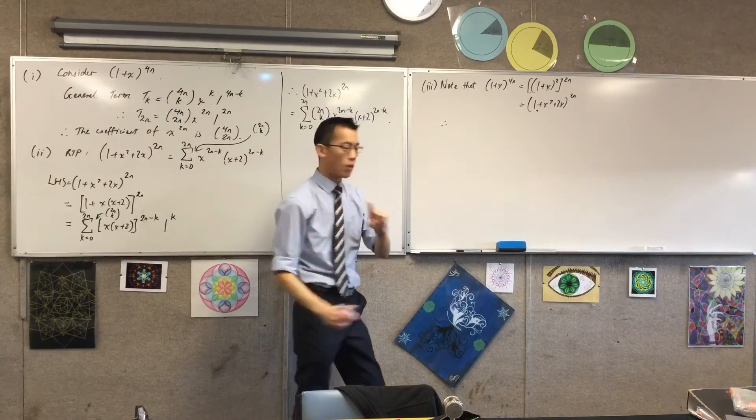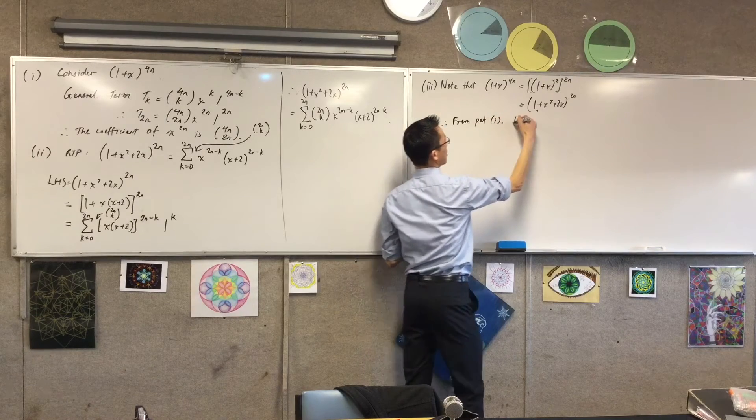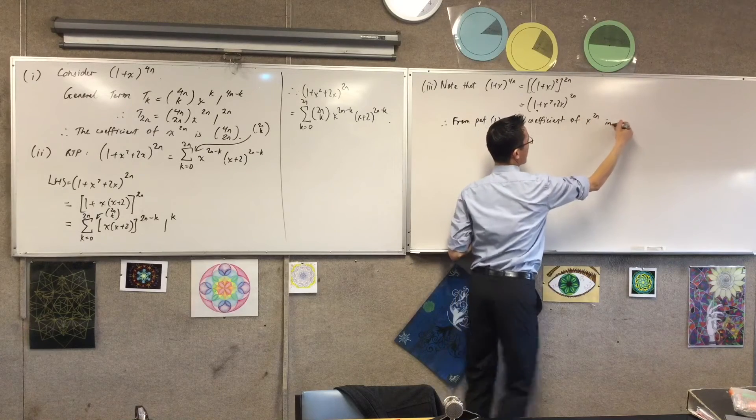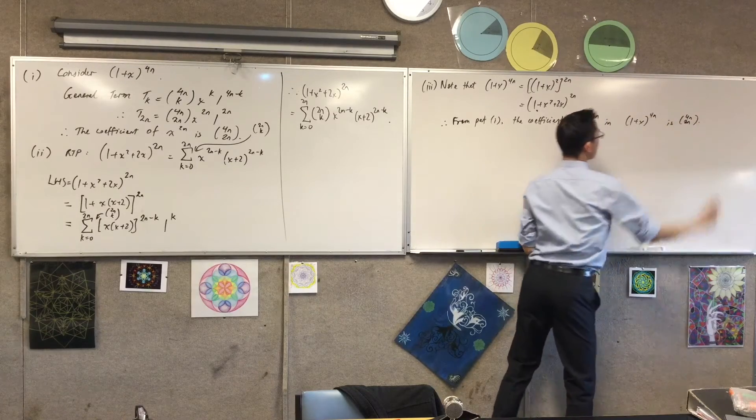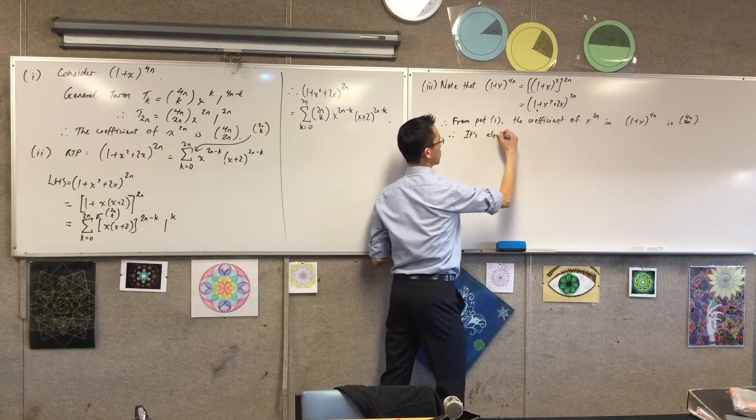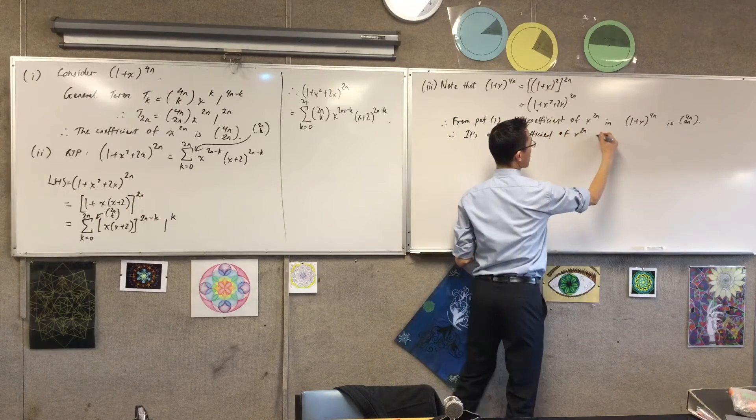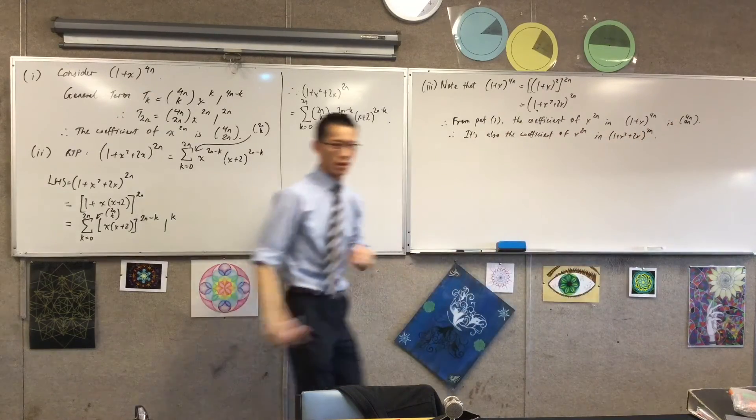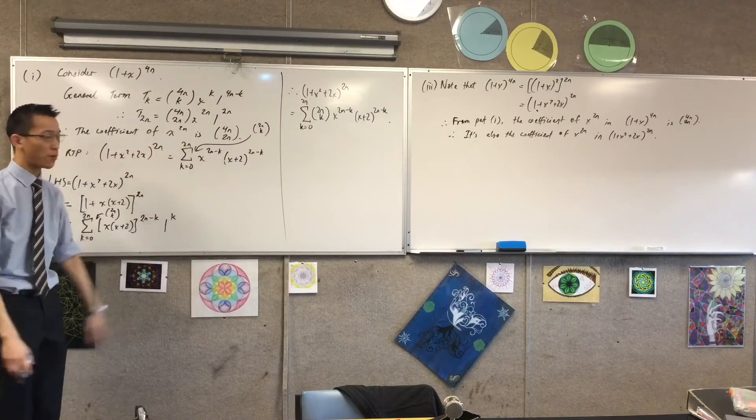And that is one plus x squared... I'm just writing it in the unusual order that they presented it to me in part two. So, I've shown you that that's equivalent. You could have done it in reverse if you'd like. So, therefore, since part one, from part one, the coefficient of x to the two n in one plus x to the four n is this.